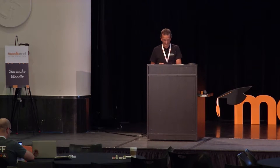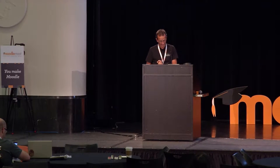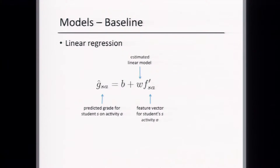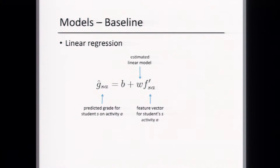For those not familiar with standard linear regression, the goal is to predict the grade that a student will achieve on a particular activity. G-hat subscript SA is the grade that student S will achieve on activity A. That grade is modeled as a linear regression with a bias term beta, and W is the linear model. F-prime SA is the feature vector representing the student, containing all the different features I described. This is a global model for all students — we estimate a single weight vector that tells us how important the different features are in predicting the grade.